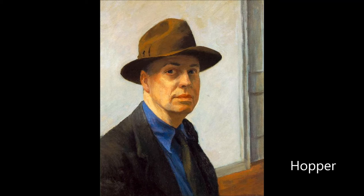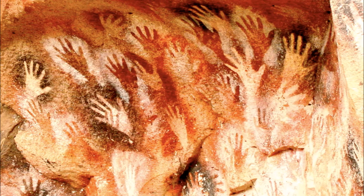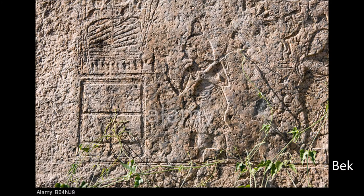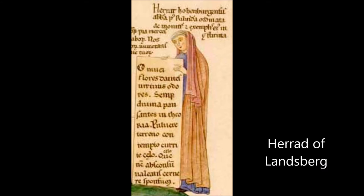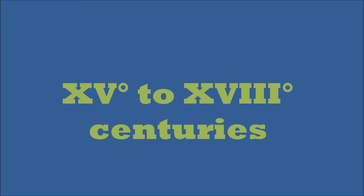Even if most of the works have disappeared, we know that self-portraits originated at about the same time as portraits. The prehistoric men who created cave paintings used their own hands as a model. In ancient Egypt, Bek, the chief sculptor of Akhenaten, represented himself on his stele in Amarna. The sculptor Phidias is recognizable on the Athenian shields. The first numerous collection of self-representations comes from the illuminators who embellished medieval manuscripts.